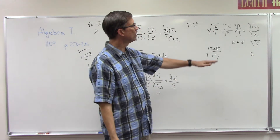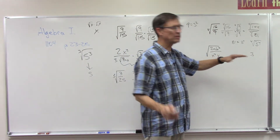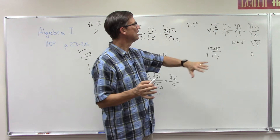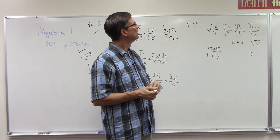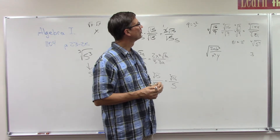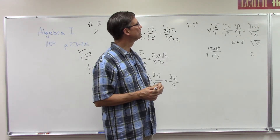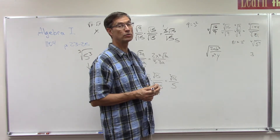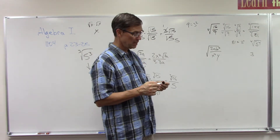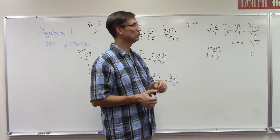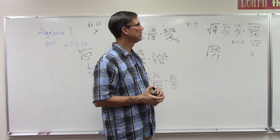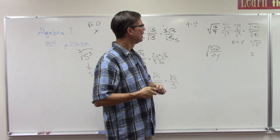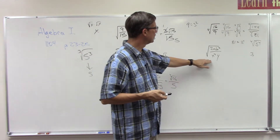The hardest part is getting that denominator rationalized — focus on that, and whatever happens with the top, just leave it. For the 144 in the numerator, you'd need to break it down and see what factors make it up. If any factors are to the fourth power, you could pop one of those out.